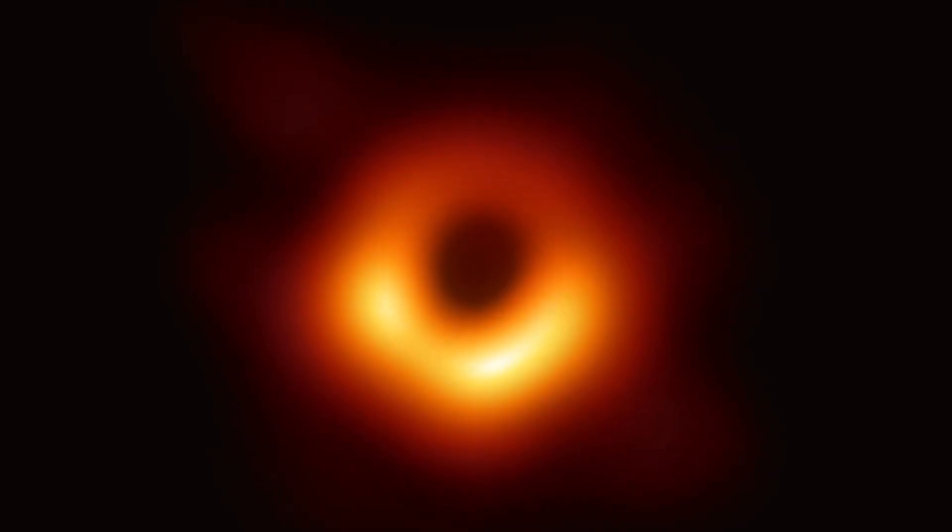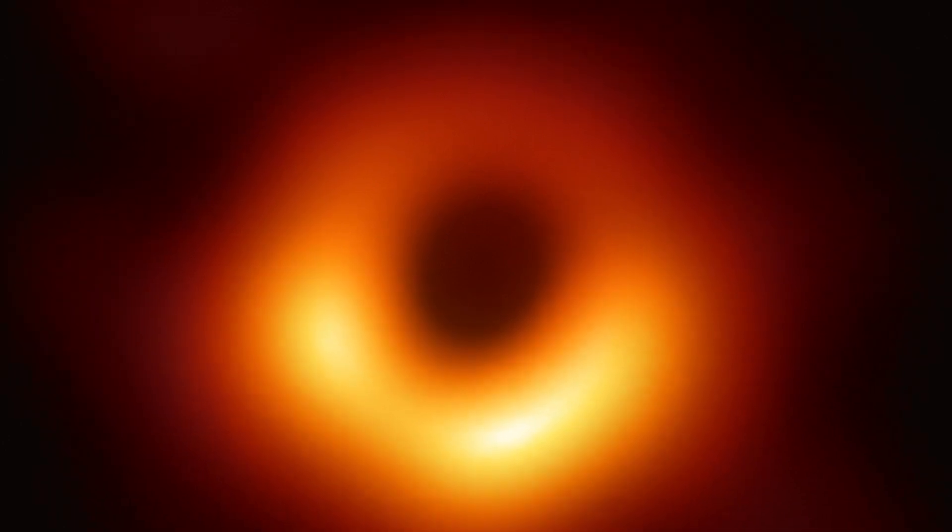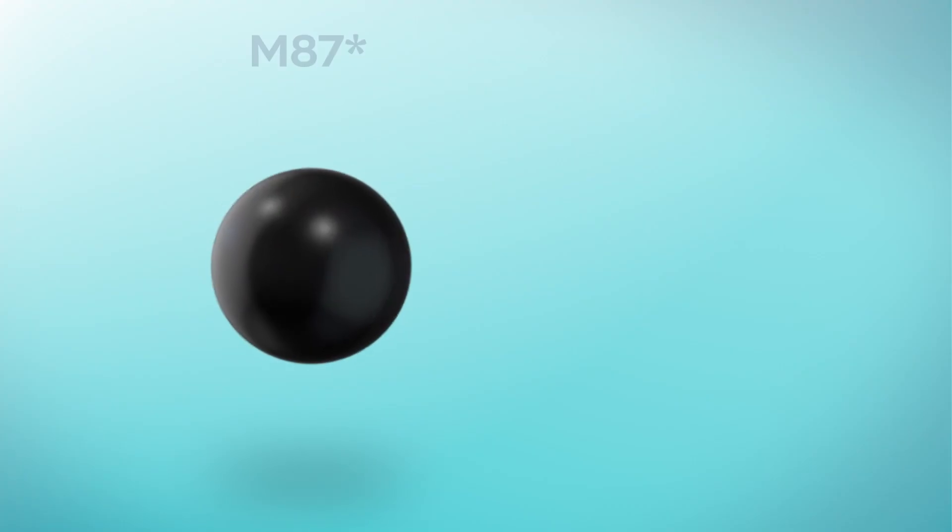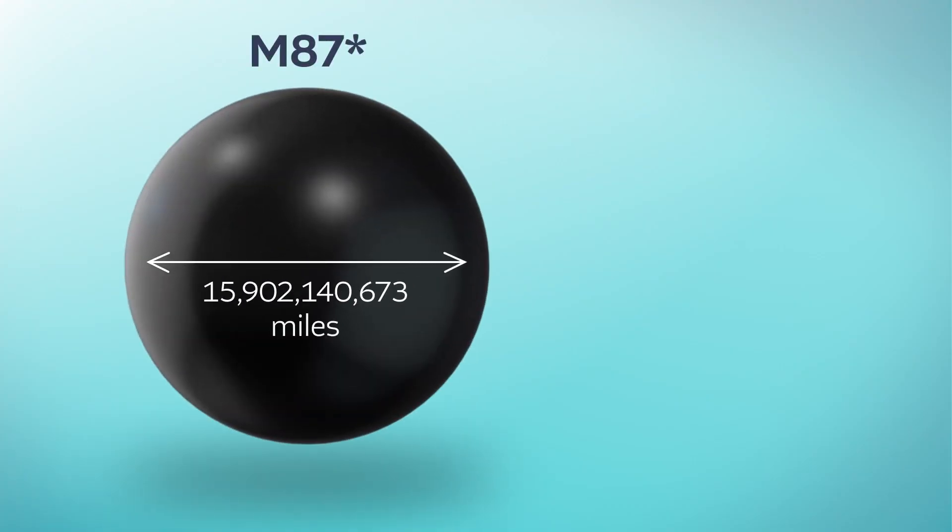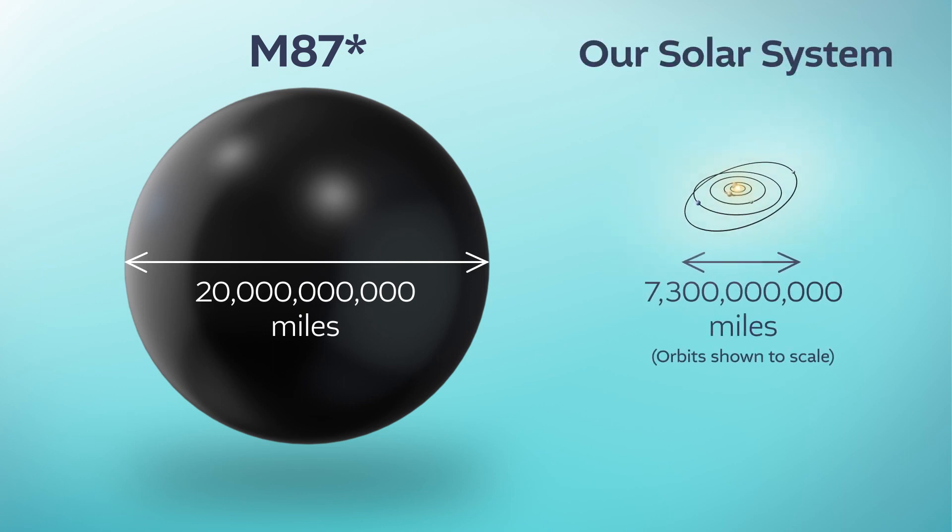The first black hole imaged by the Event Horizon Telescope lies at the heart of the M87 galaxy. At more than 20 billion miles across, this black hole is larger than our entire solar system.